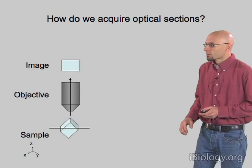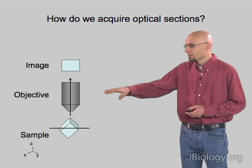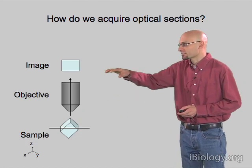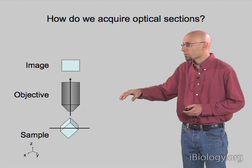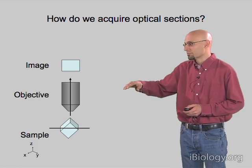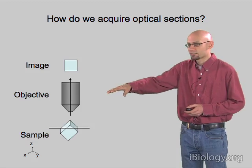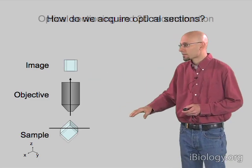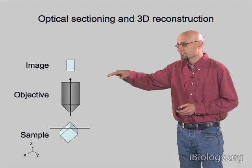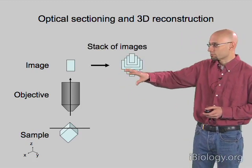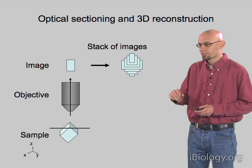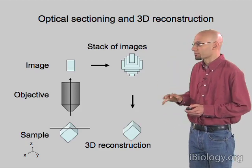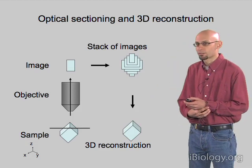We need a microscope where we can take images at different heights. We have our sample here, illustrated by this little cube. We take a picture of it, so we get a slice through the sample. We then step the focus — we physically move the sample up or down — to get a second slice through a different portion. We can keep doing this, getting slices through different parts of the object, and then get a stack of images which we can assemble into a three-dimensional structure in the computer.